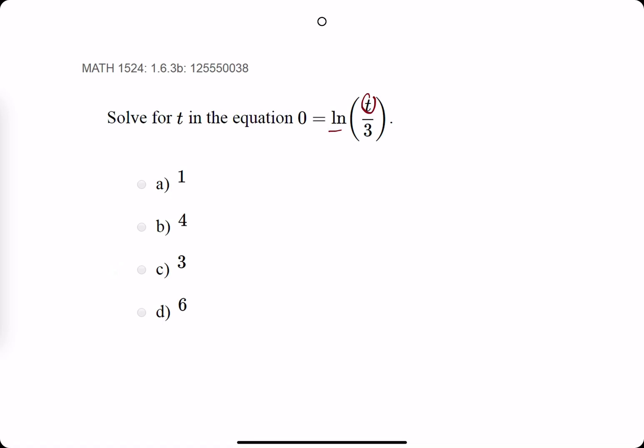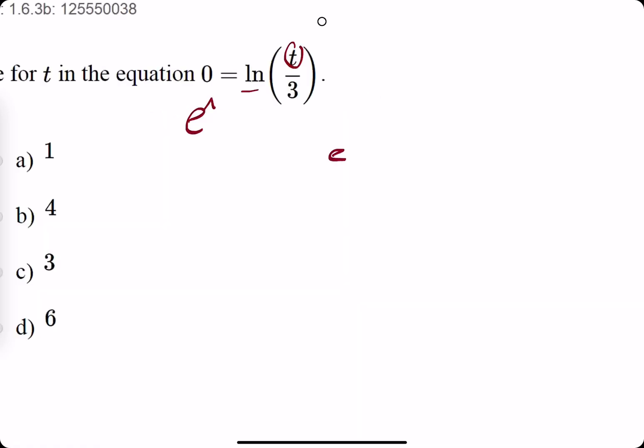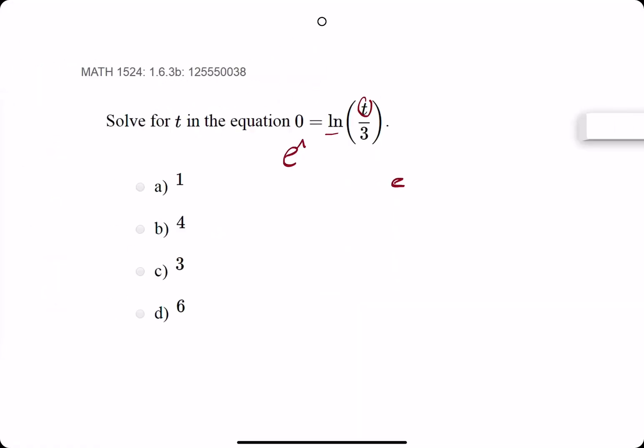So how we do that is we take e raised to the power of both sides. And what this does is whenever you have e to the natural log of x, what you get is x.